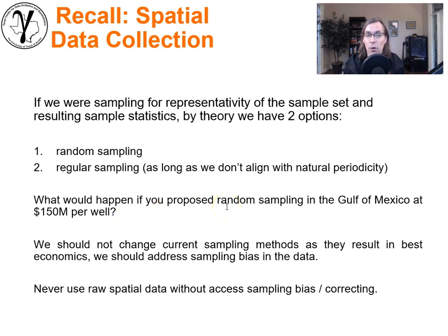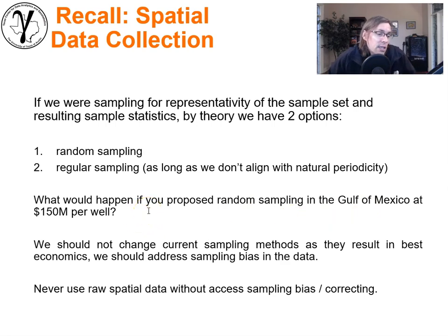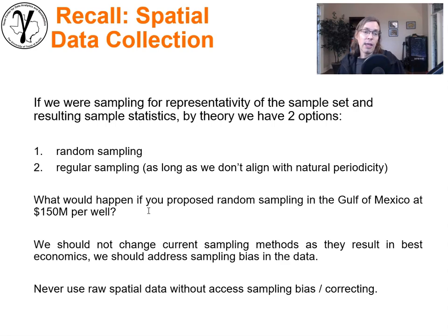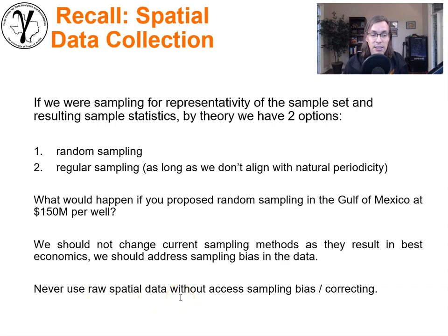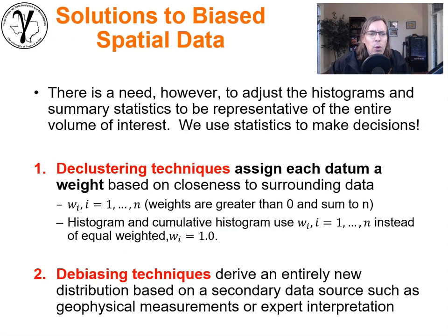What would happen if you went to your asset manager and said, I want to drill the next well in the Gulf of Mexico — 150 million dollars maybe with a production test — using random sampling? Of course, that would be ludicrous. We can't change the way we sampled the data for statistical representativity. But with our geostatistics and data analytics knowledge, what we do is address the sample bias after sampling. Our rule is: never use raw spatial data to calculate statistics without making an attempt to assess bias and correct it.